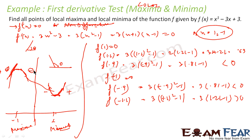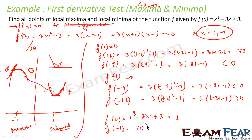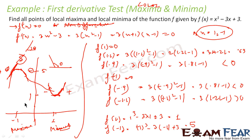If you want to verify, we can verify also. f(1) = 1³ - 3(1) + 3 = 1 - 3 + 3 = 1. And f(-1) = (-1)³ - 3(-1) + 3 = -1 + 3 + 3 = 5. So f(-1) = 5 is the local maximum and f(1) = 1 is the local minimum.